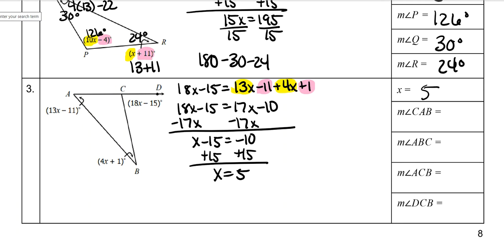Then it says find the measure of CAB. In order to figure out what angle it's talking about, play connect the dots. CAB is this angle. So 13 times 5 minus 11. Use the calculator. That's 54.